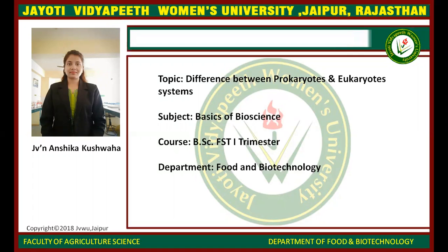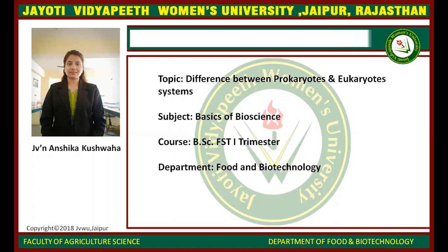Prokaryotes are the larger group of organisms. They are unicellular organisms found in all environments. Prokaryotes do not have a nuclear membrane, and their genetic material is dispersed throughout the cytoplasm. Prokaryotes do not have membrane-bound organelles, and they have a simple internal structure. Prokaryotes are simpler and smaller in size when compared to eukaryotes.